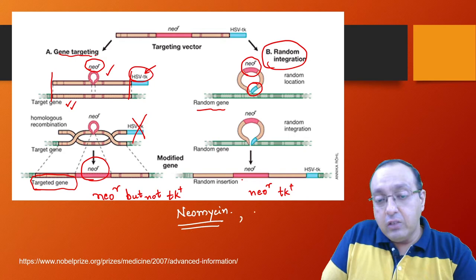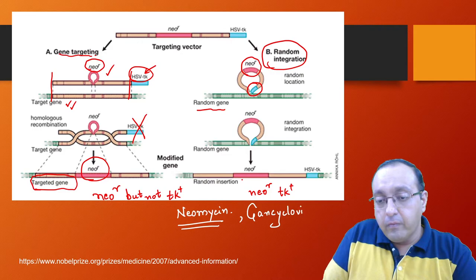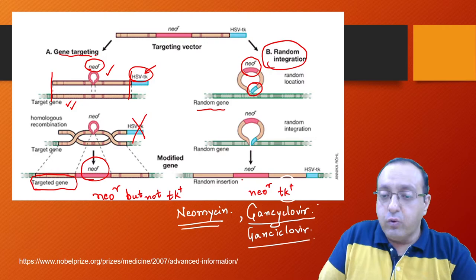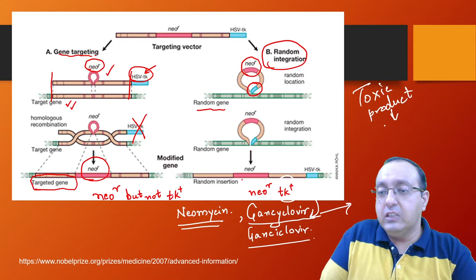And in addition we use a drug called ganciclovir. It has various different spellings—sometimes it is also spelled with an 'I'. So ganciclovir. The interesting thing is when thymidine kinase works on ganciclovir, it converts it into a toxic product, and it will lead to cell death.